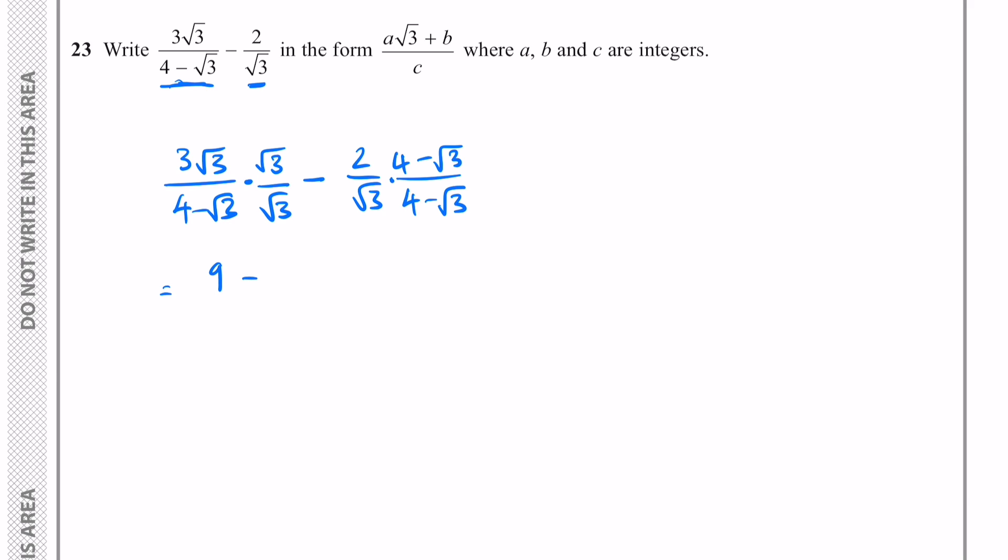Then we have subtract and put the second expression in brackets because that negative will distribute to both terms. Here we have 2 times 4 which is 8 and 2 times negative √3. Let's just write that as such. And this is all over √3 multiplied by 4-√3.